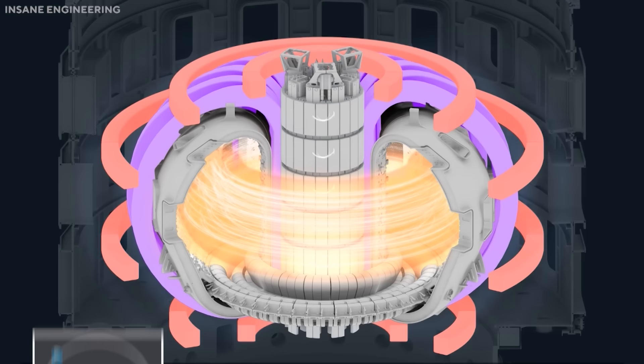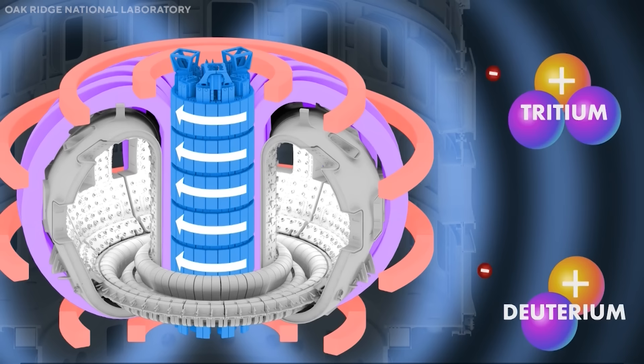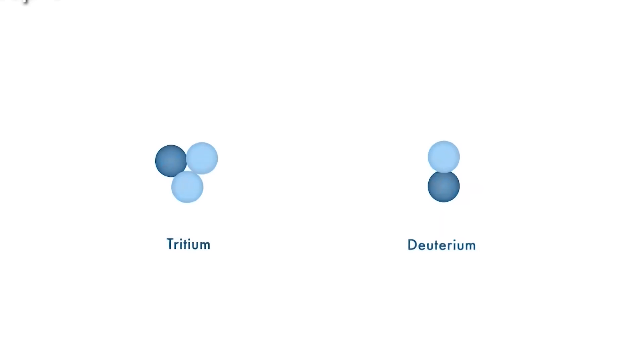ITER's fusion power output will be dissipated as heat and not converted into electricity. ITER's fusion power will also be limited by the availability and supply of tritium, a rare and radioactive isotope of hydrogen that is used as fuel for fusion reactors. ITER will rely on external sources of tritium, such as nuclear fission reactors or spallation neutron sources, and will not produce enough tritium to sustain its own operation.